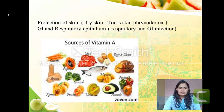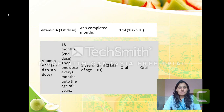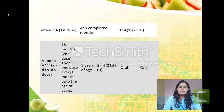Vitamin A deficiency can occur in children as well as adults. To prevent its deficiency, the government supplies vitamin A supplements to children from nine months to five years of age. The first dose is at nine months — 1 ml or 1 lakh international units, given orally. The second dose is at 18 months, then every six months up to five years. Up to nine months the dose is 1 lakh IU; after that it is 2 lakh IU (2 ml), given orally.